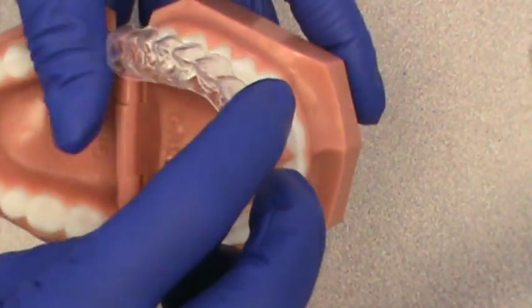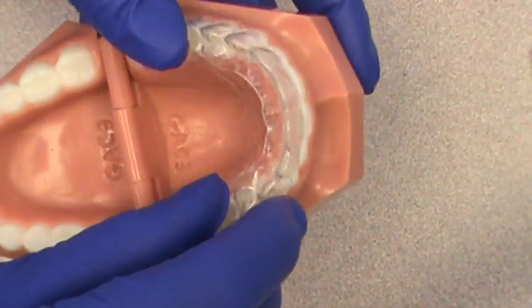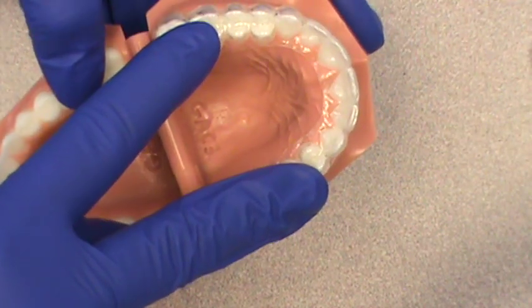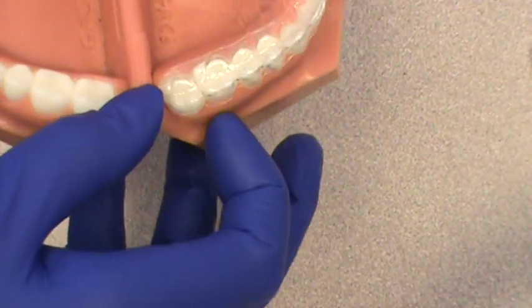Probably the most important thing you want to remember is when you put it in, you don't want to bite it into place. You want to gently put it in there with your finger pressure. To take them out, you want to make sure you pull down on both sides at the same time and dislodge the retainer.